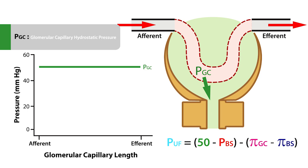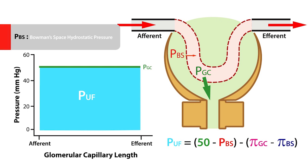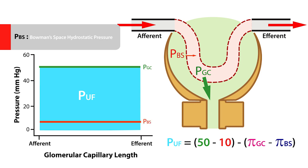With this in mind, the net ultrafiltration pressure along the length of the glomerular capillary, represented by the blue area, is equal to the glomerular capillary hydrostatic pressure. As the ultrafiltrate moves into the Bowman space, it creates a small but uniform hydrostatic pressure referred to as the Bowman space hydrostatic pressure, abbreviated as PBS. It changes little across the glomerular capillary, with an average of 10 mmHg.